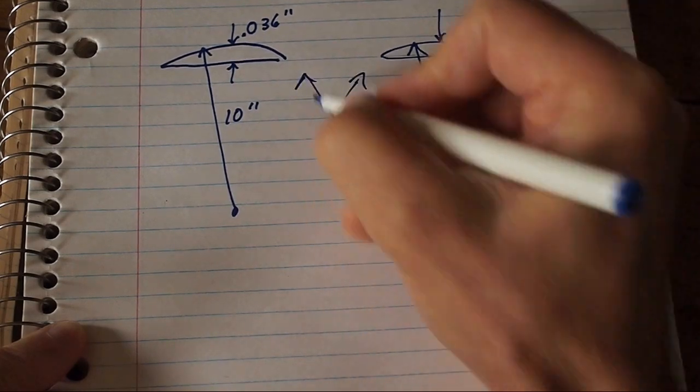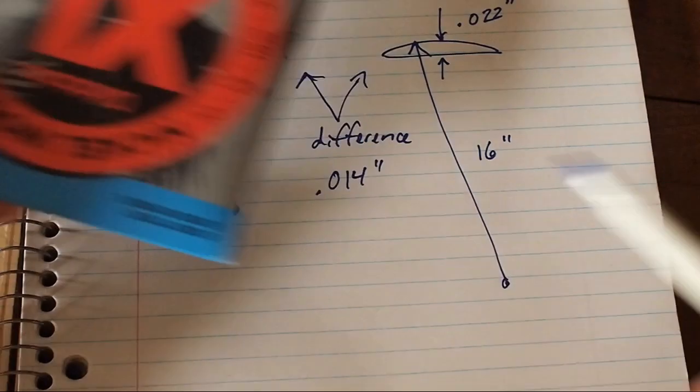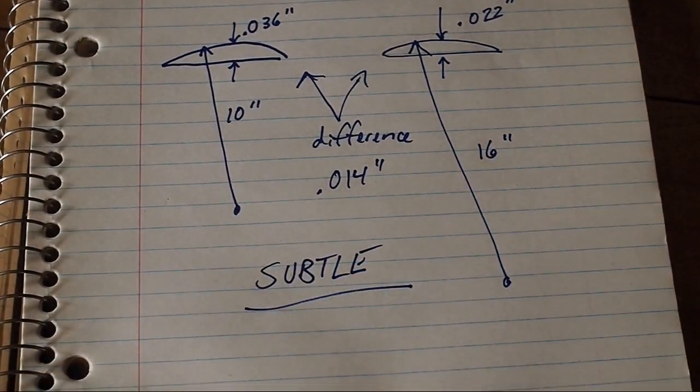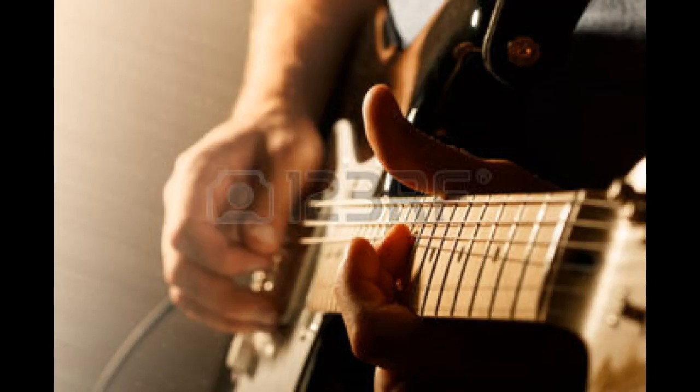So the difference between the two is only about the thickness of a B string. So the usual reason given for going with a compound radius is that it's easier to chord with a small radius down by the nut and easier to bend notes on a flatter radius up towards the top of the neck.